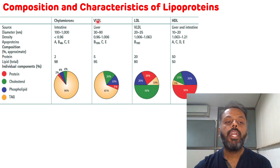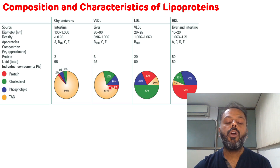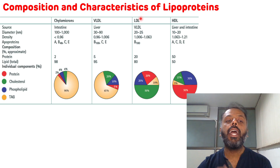For VLDL: lipid content is 95% and protein content is 5%. Within the 95%, triacylglycerol is 65%, cholesterol is 20%, and phospholipid is 10%.